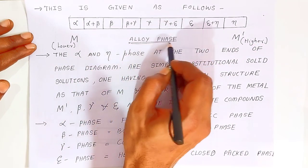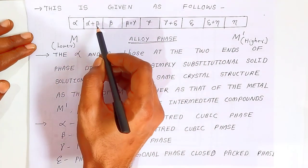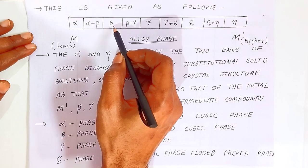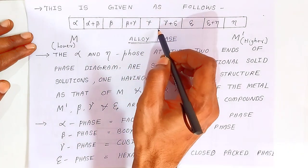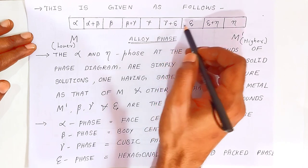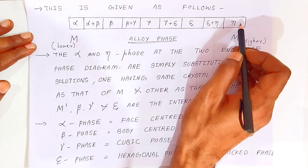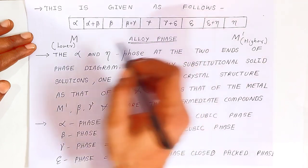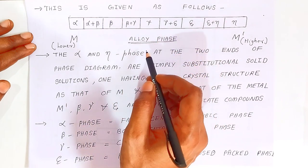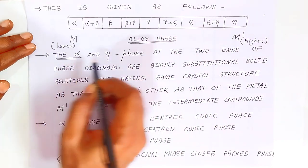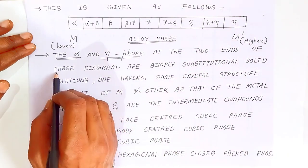When the alloy forms, the alloy phases will be: alpha plus beta, then formation of beta phase, then beta plus gamma, then gamma alone, then gamma plus epsilon, then epsilon, then epsilon plus eta. So when you add these two metals, different phases will form. The alpha and eta phases are at the two ends of the phase diagram.